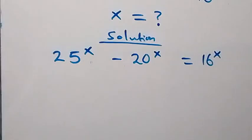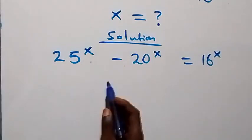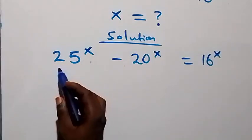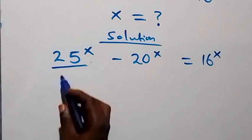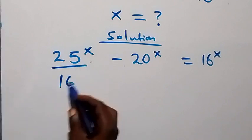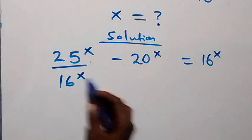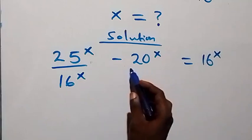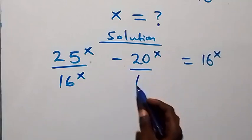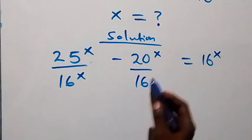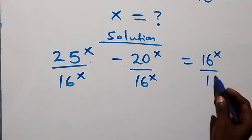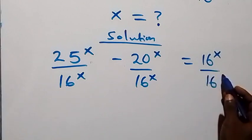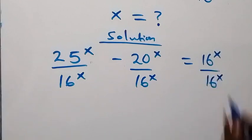From here, let's divide both sides by 16 raised to power x — we divide everything by 16 raised to power x on each term.